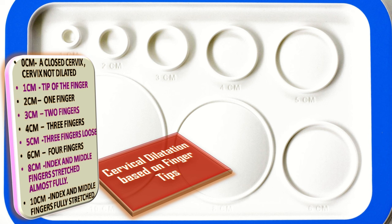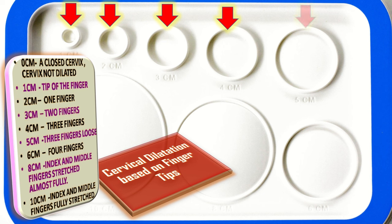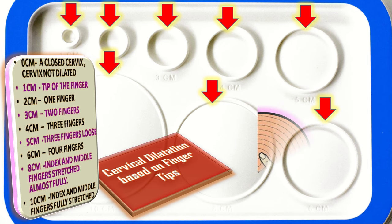Cervical dilation varies from person to person depending on finger size, but roughly: zero centimeters means a closed cervix; one centimeter means the tip of a finger can pass; two centimeters means one finger can pass; three centimeters means two fingers; four centimeters means three fingers; five centimeters means three fingers loosely; six centimeters means four fingers; eight centimeters means the index and middle fingers stretched almost fully; and ten centimeters means the index and middle fingers fully stretched.